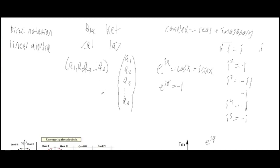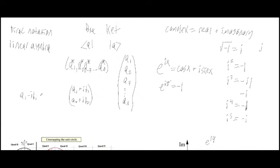Going back to Dirac notation: the bra vector is the complex conjugate of the ket vector. So if the ket vector has components a1 plus ib1 and a2 plus ib2, then the bra (row) vector would be a1 minus ib1 and a2 minus ib2. These are the complex conjugates of the ket components, and we would mark them with an asterisk to denote that.